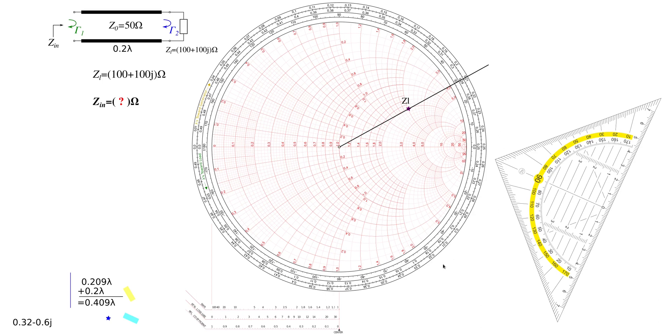So now on the outermost ring we can read off our starting angle, and the starting angle is measured in lambdas for simplicity, for convenience. You can see that here that it's labeled lambdas towards generator. That means we start here and then we move towards generator. That means we go clockwise.